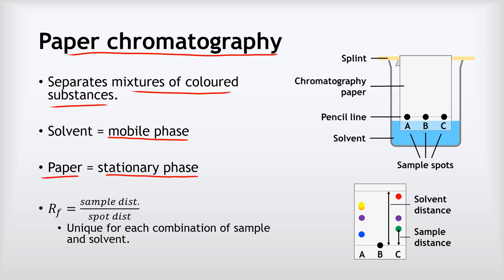In terms of our method, we make these little sample spots of our colored substance on a pencil line on the chromatography paper. We suspend it in the solvent with the solvent below the level of that pencil line. Over time the solvent will soak up our chromatography paper and drag the colored substances with it.